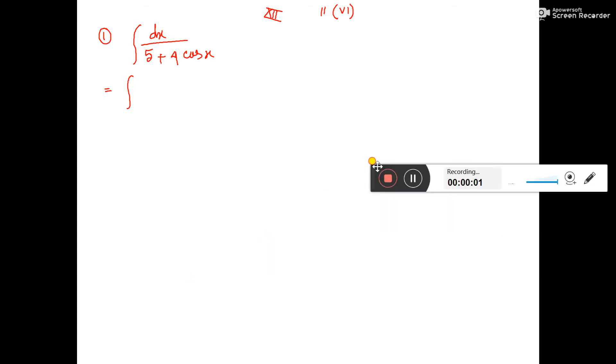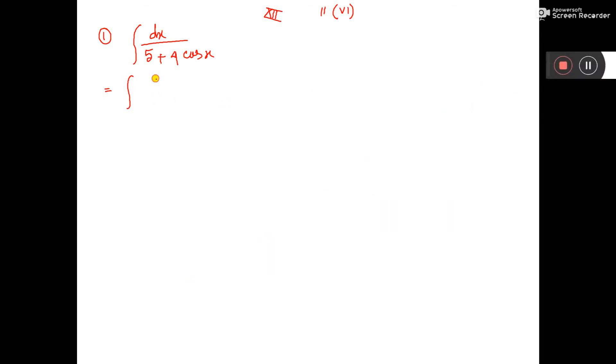Some you can do, first you write cos x is equal to 1 minus tan, this is minus, 1 minus tan square x by 2 by 1 plus tan square x by 2.